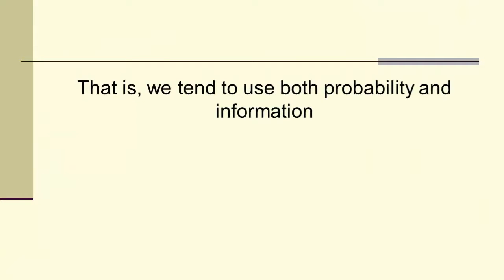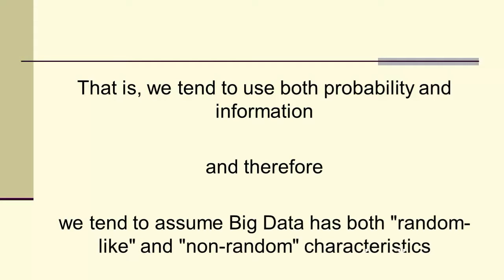So we tend to use probability and information. And therefore, we tend to assume big data has random-like properties, even if it's completely non-random, simply because we'll be using proportions, relative frequencies, probabilities, at least in the relationship that we have those things to information.